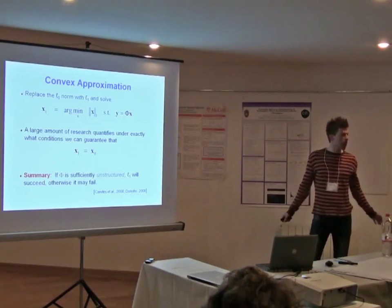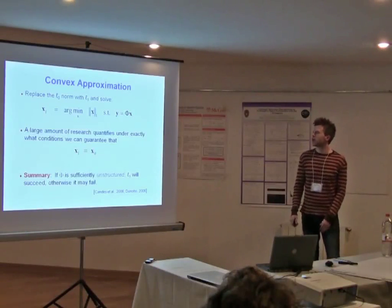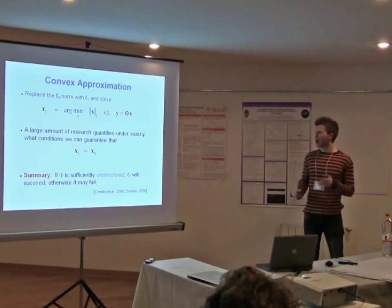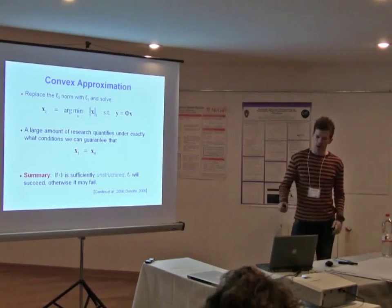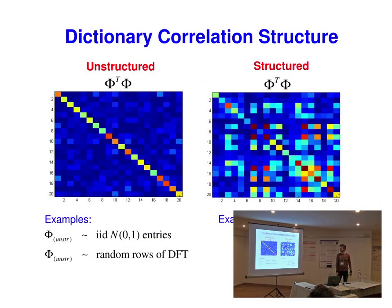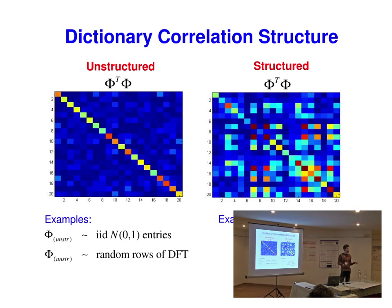To summarize in a hand-wavy fashion: basically, if the dictionary phi is sufficiently unstructured, then L1 will succeed; otherwise it will fail. What you mean by unstructured is: if you take the dictionary and look at every pairwise correlation between columns, if most of the energy is along the diagonal, that's unstructured — there's not a lot of correlation. There's some because the dictionary is over-complete, so there's always going to be some correlation, but it's as small as possible.